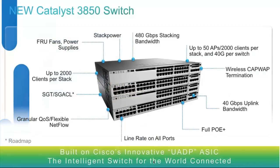The 3850 comes in two flavors: 24-port and 48-port. The 24-port comes with one UADP ASIC — Unified Access Data Plane ASIC — which is a new ASIC designed in-house by Cisco. It handles maximum processing for the switch itself so the CPU is not overloaded, and all hardware configs are done on it. The 48-port comes with two UADP ASICs. There's a performance difference between the switches because the 48-port has two UADP ASICs and the 24-port has one.